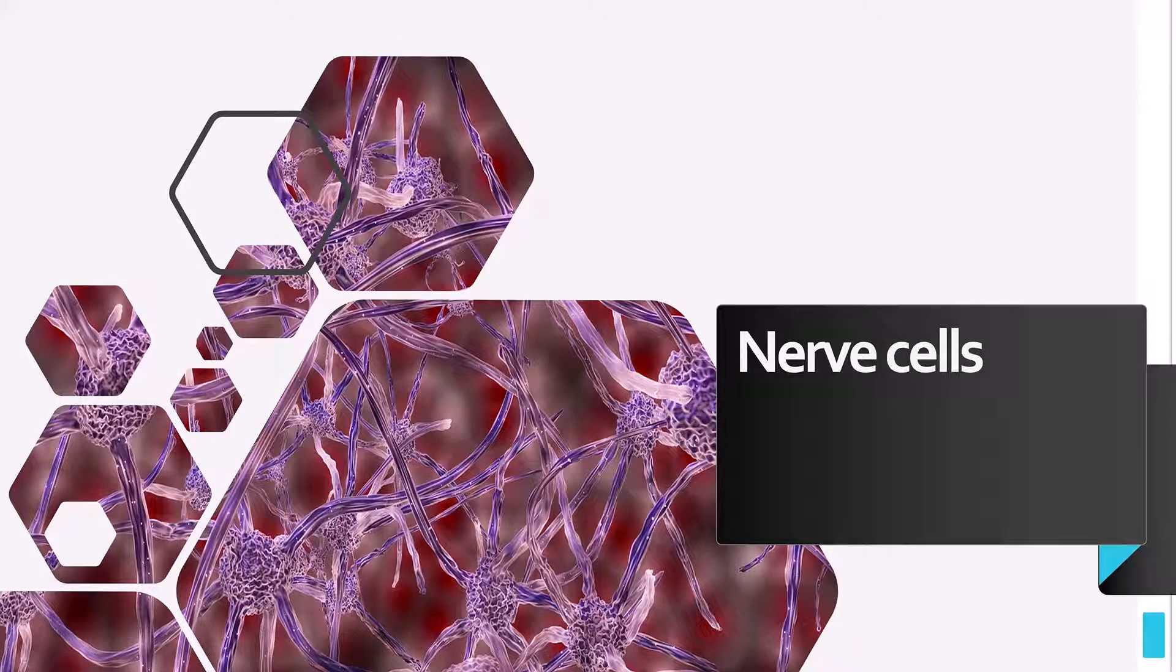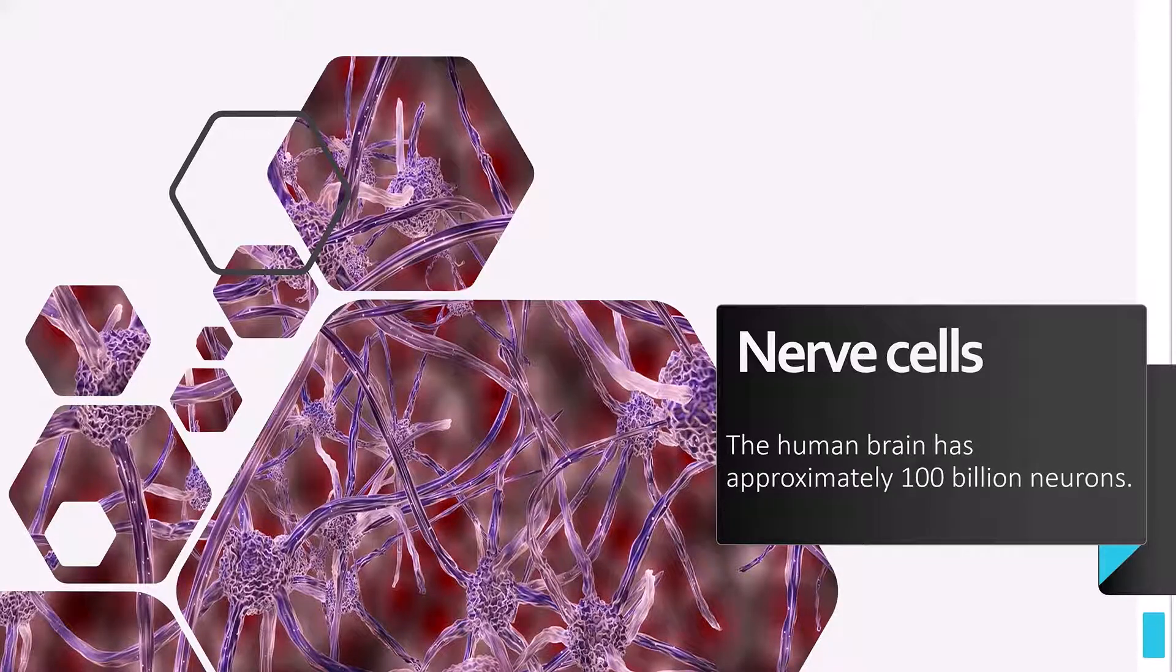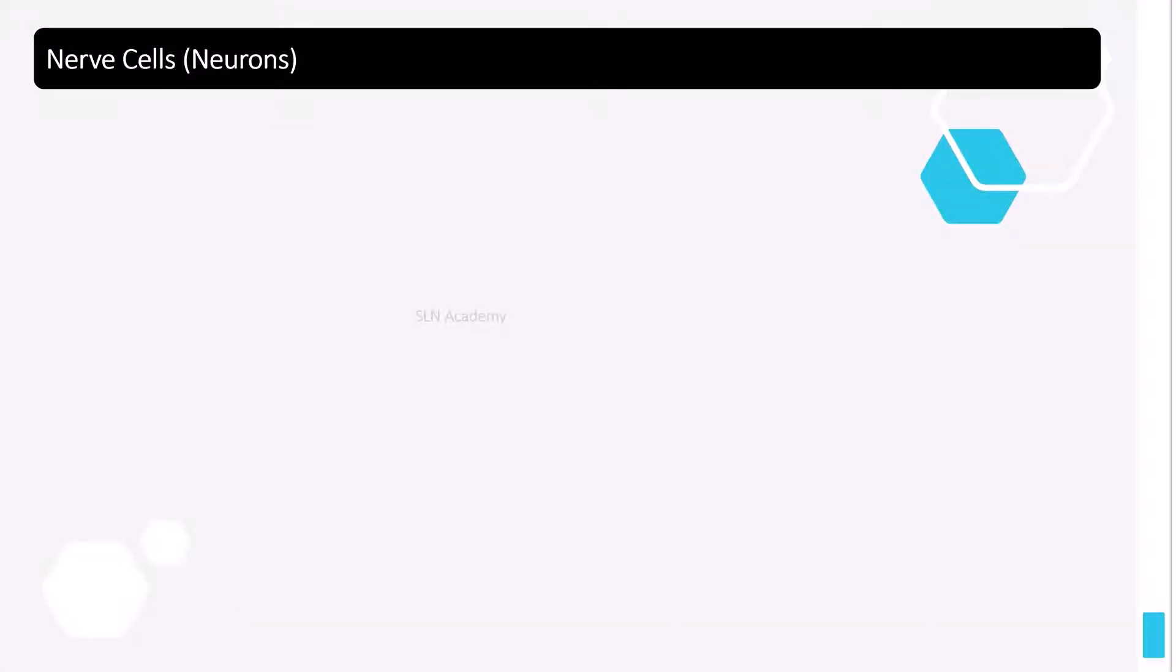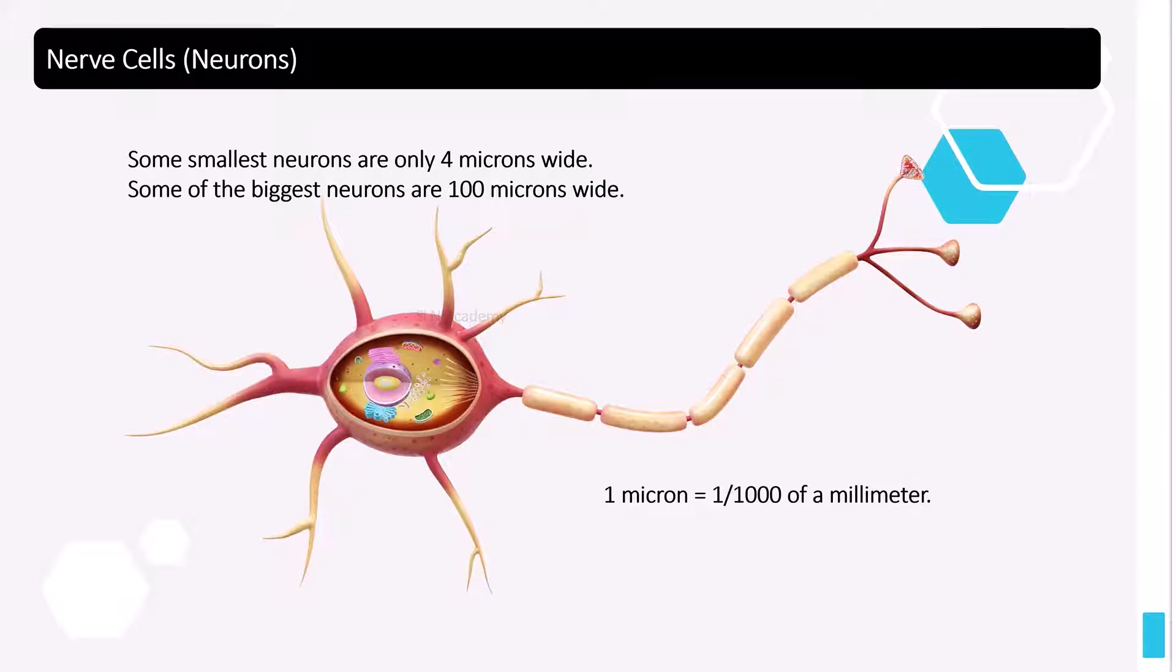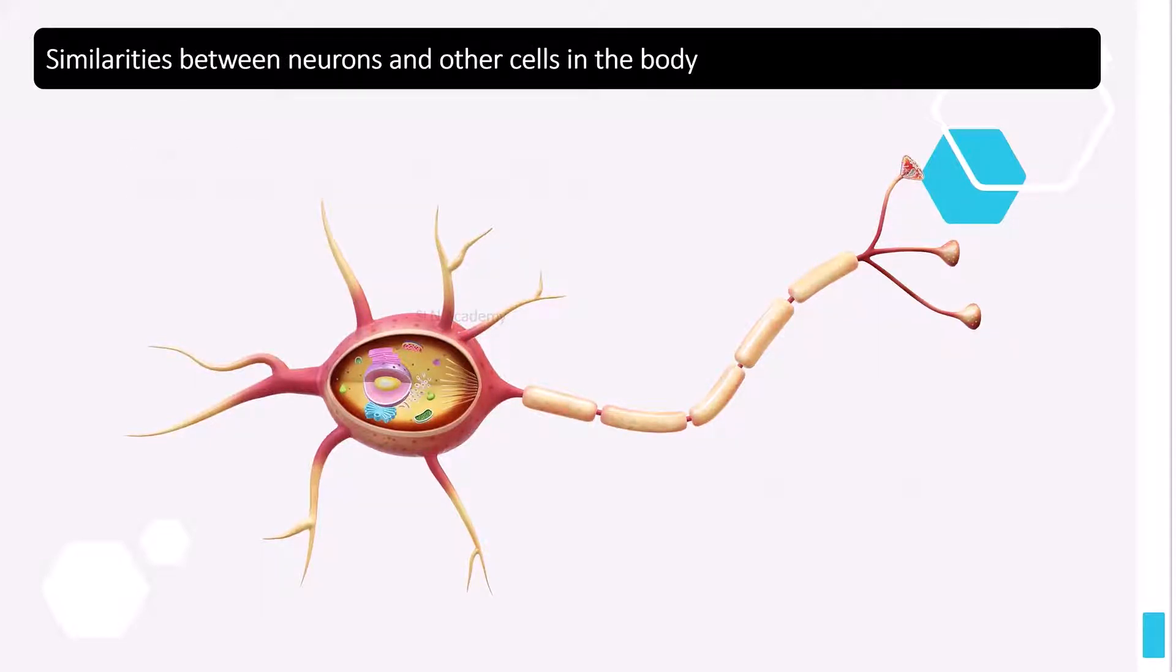Neurons come in many different shapes and sizes. Some of the smallest neurons have cell bodies that are only four microns wide. One micron is equal to one thousandth of a millimeter.